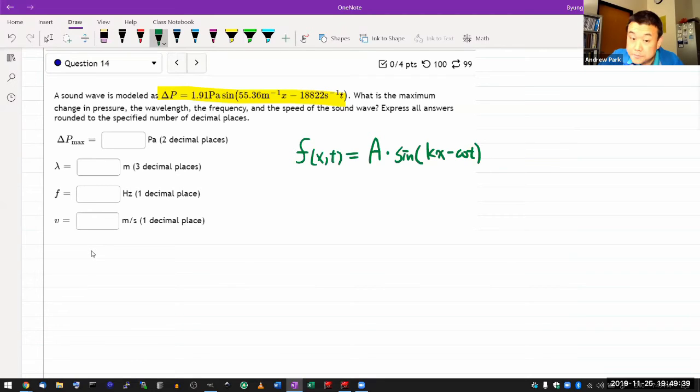So in this particular case, all the terms are written that way. So here's my A. Here's my k. Here's my k in basic SI units, and here's my omega.